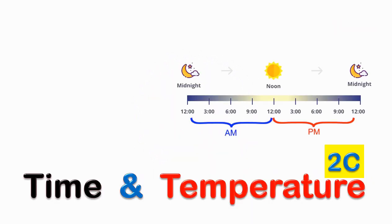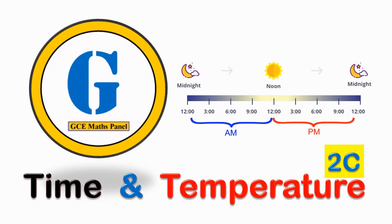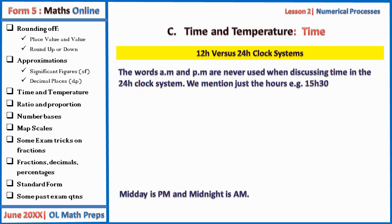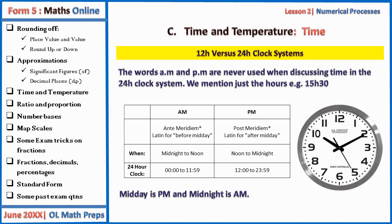Greetings to all ordinary level candidates preparing for mathematics. Welcome to the GCE math panel. In this lesson we are looking at time and temperature. We begin with the concepts of the 12-hour clock and the 24-hour clock. The words am and pm are never used when discussing time using the 24-hour clock system — we mention just the hours, for example 15:30 meaning 3:30 pm.